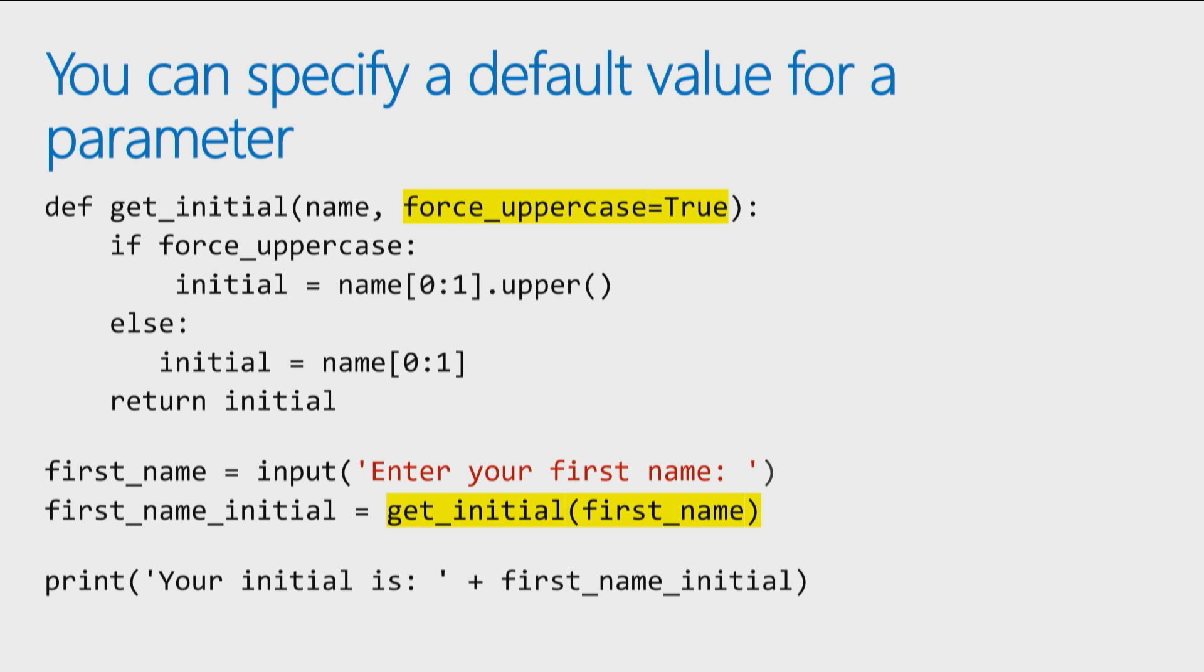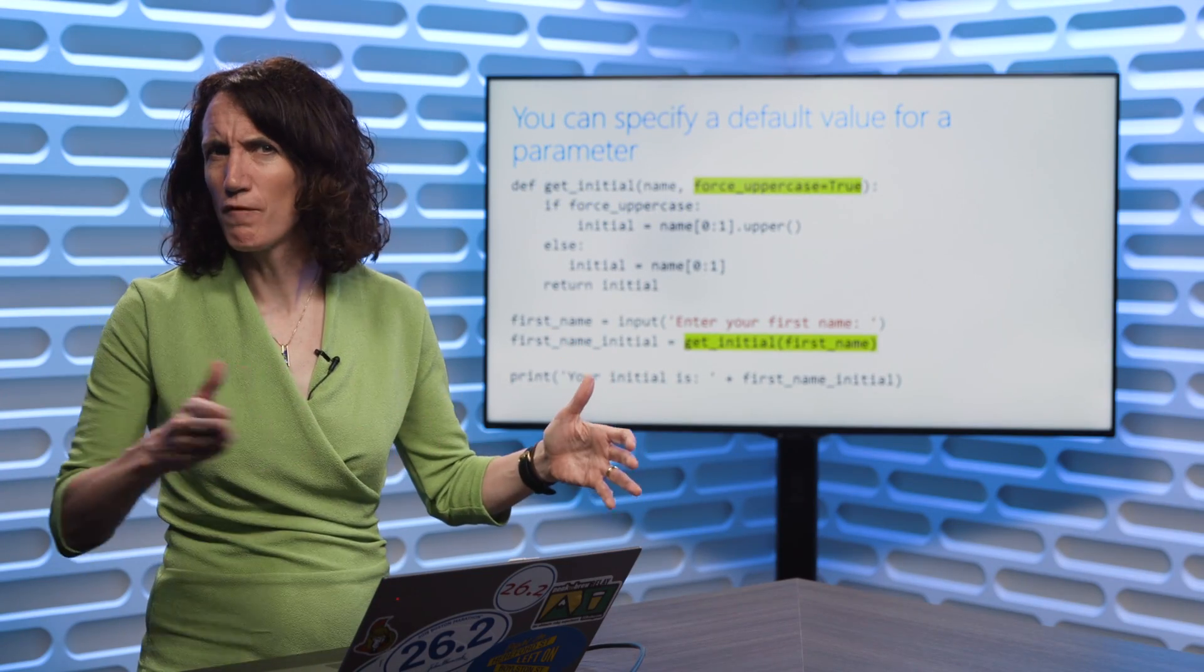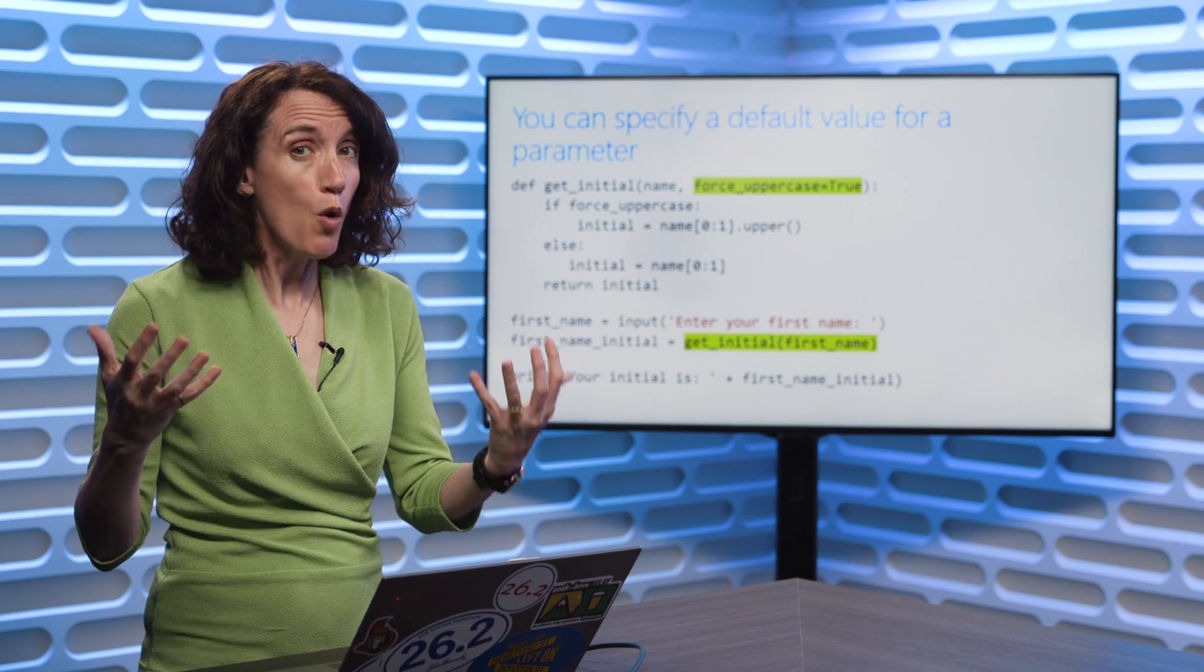This is another one of those things you'll see a lot when you look at tutorials and blog posts. You'll be like, how come over here when they call it, they passed in four or five values, and over here when I called it, I only passed in one value. What's going on?